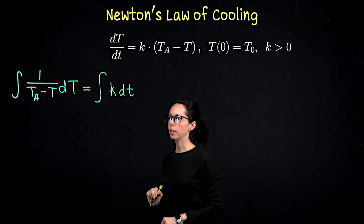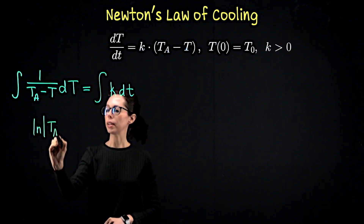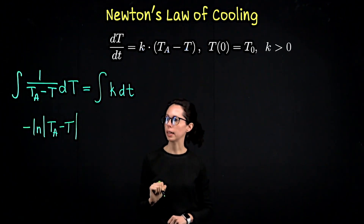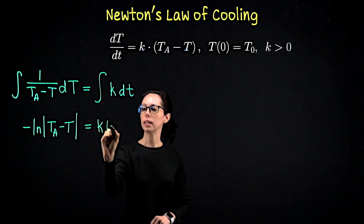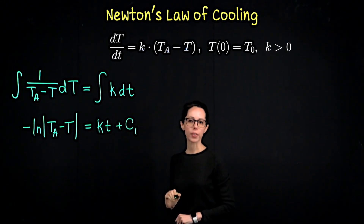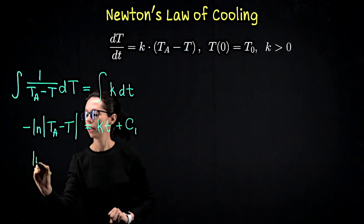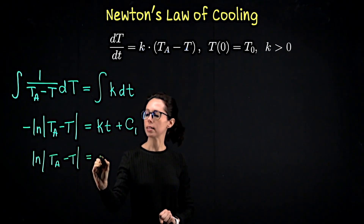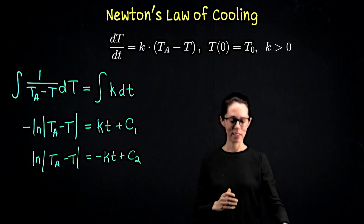On the left-hand side, integrating gives the natural log of the absolute value of (T_a minus T), but we pick up a negative sign in front of that natural log. On the right-hand side we get k·t plus a constant of integration. Multiplying both sides by negative one to clear the leading negative, we get: natural log of |T_a − T| equals −k·t + C₂, where C₂ is negative C₁.